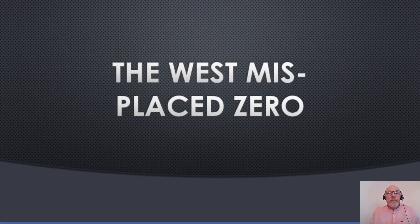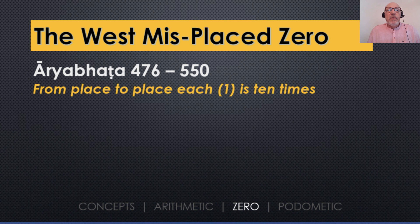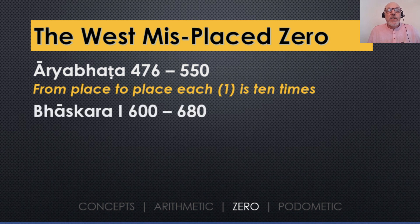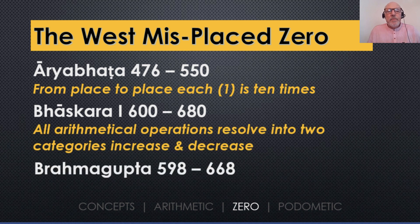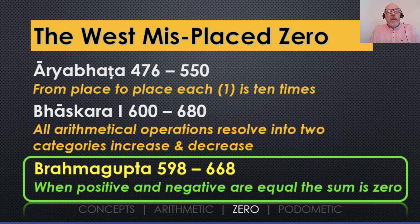So how did this happen? The West misplaced zero. We've got three key mathematicians from the golden age of Indian mathematics: Aryabhata, Bhaskara I, and Brahmagupta. Now it's Brahmagupta that I'm particularly focused on in the concept of zero — or Shunya — because this is the key issue that lays at the heart of the problems in explaining the foundations of mathematics.